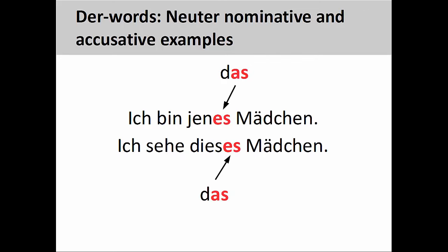Now onto the neuter forms. In the first sentence, ich bin jenes Mädchen (I am that girl), you can see that the -es ending on jen is close to the neuter definite article in the nominative case, but does not fully resemble it. In the sentence right below, ich sehe dieses Mädchen (I see this girl), the -es ending on dies is close to the neuter definite article in the accusative case. You'll recall that neuter definite articles in both nominative and accusative cases end in -as, whereas der-words have an -es ending.